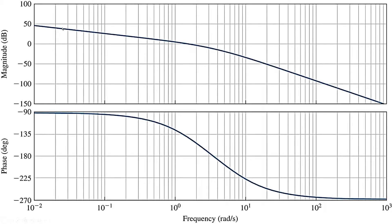Now what you can see from here is that at approximately zero radians per second there is a phase shift of minus 90 degrees. That means there is a pole at the origin. How can we confirm this? I just look at the phase and I already estimated there is a pole at the origin.